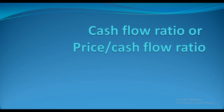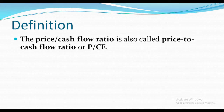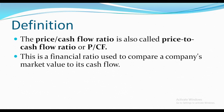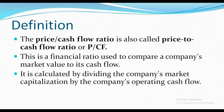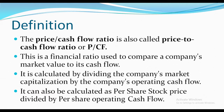The price to cash flow ratio, also called P/CF, is a financial ratio used to compare a company's market value to its cash flow. It is calculated by dividing the company's market capitalization by the company's operating cash flow, or alternatively as per share stock price divided by per share operating cash flow.